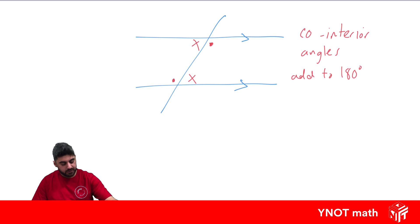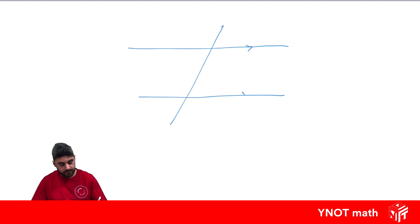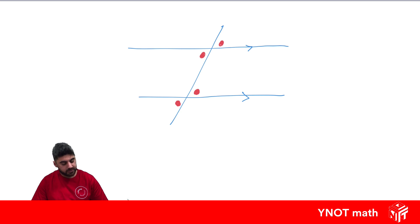These two angles over here are also co-interior and will also add up to 180 degrees. One of the most useful diagrams to get to know with parallel lines and transversals has these two angles equal because they're corresponding, this angle also equal to this angle because it's alternate, and this angle also equal to this angle because they're corresponding. This angle equals this angle because they're vertically opposite, and this angle equals this angle because they're vertically opposite.